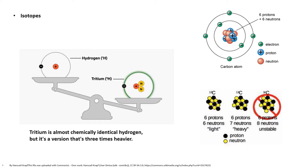Now we shall discuss the different topics related to nuclear energy one by one. To begin with, we shall take up the basic definitions which will make the understanding very easier. Nuclear technology takes advantage of the power locked in the structure of atoms — the basic particle of matter. The nucleus of an atom contains all of its positively charged protons and non-charged neutrons, and negatively charged electrons orbit the nucleus.